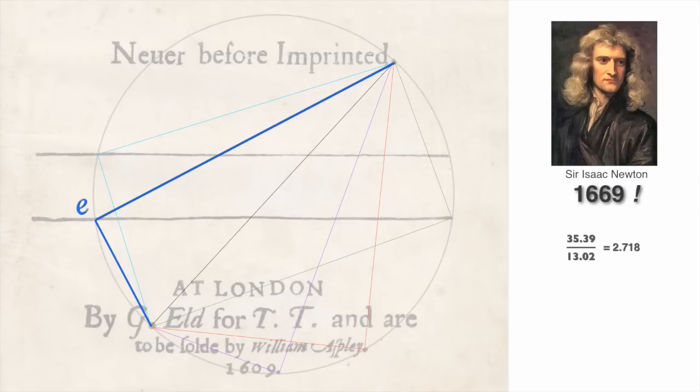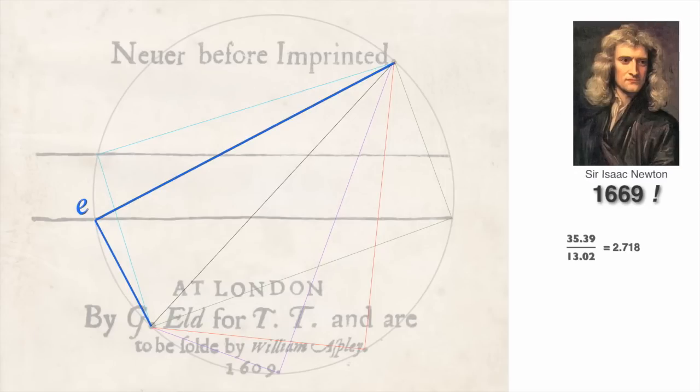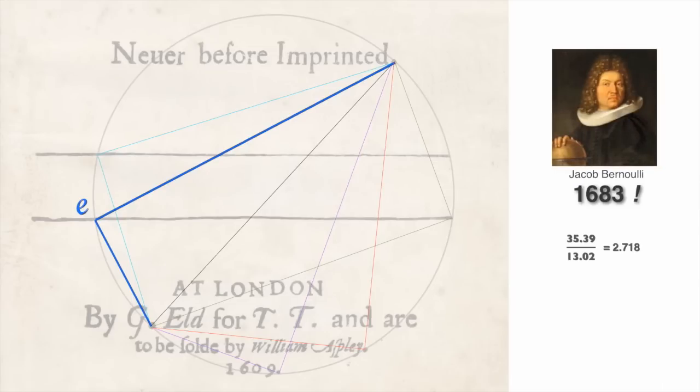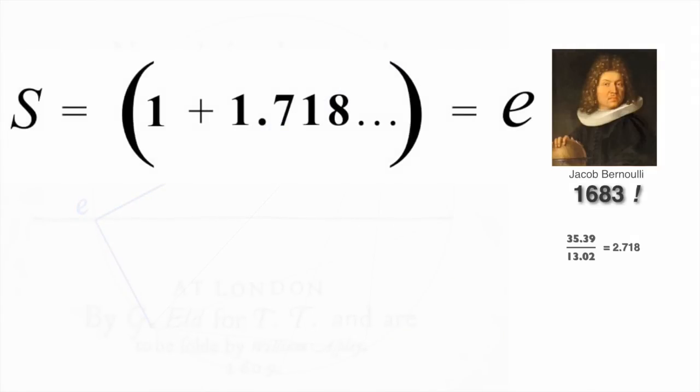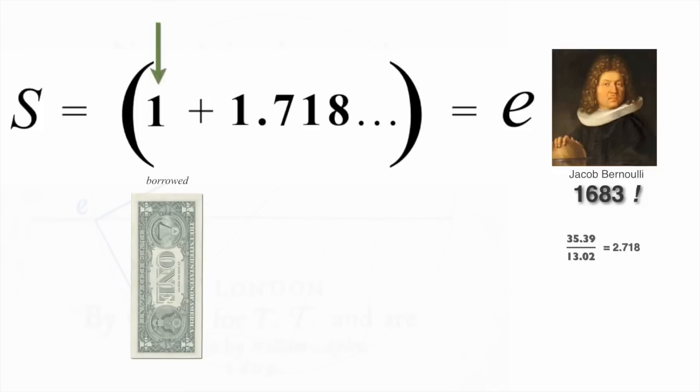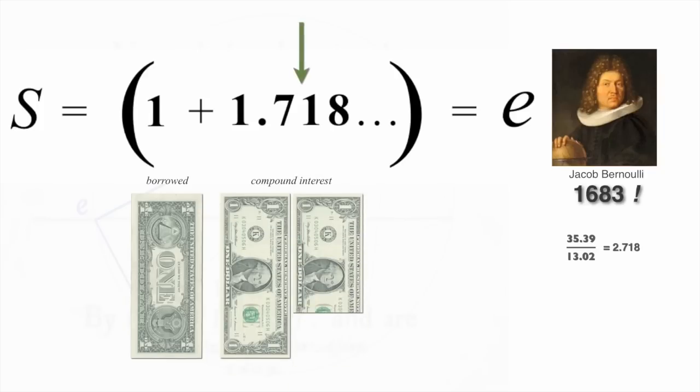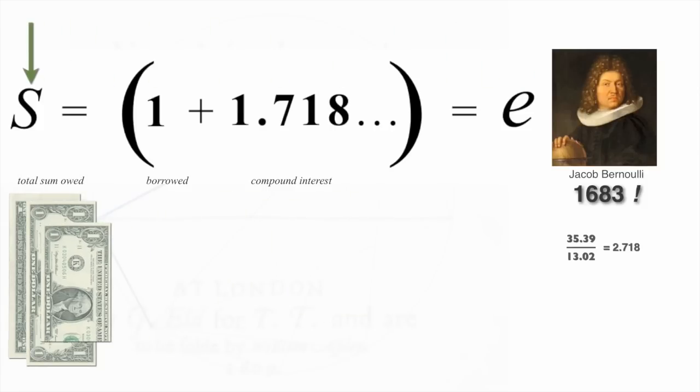Sir Isaac Newton in 1669 found it as he was inventing calculus. Jacob Bernoulli in 1683 was studying a problem we all can relate to, money and compound interest. And he came up with a simple equation. It's the same formula used by banks today to calculate how much we owe on our credit card bill. Essentially it's this. 1 is the amount that we borrowed, plus 1.718 is the maximum possible compound interest if it's calculated continuously. Total is E, or 2.718 dollars, which we owe the bank. Now, both Newton and Bernoulli concluded that the total 2.718 was what was really important, and they ignored the 1.718 part. Consequently it's not considered important in its own right, even today.